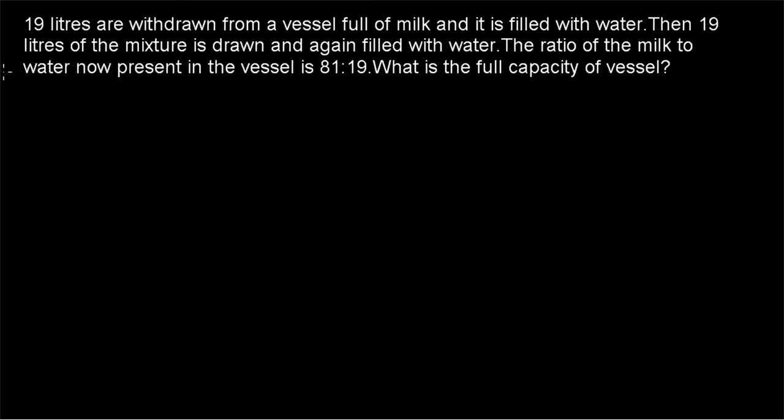Hi friends, welcome to today's class. Today's question is: 90 liters are withdrawn from a vessel full of milk and it is filled with water. Then 90 liters of the mixture is drawn and again filled with water. The ratio of milk to water now present in the vessel is 81 to 19. We have to find the full capacity of the vessel. This is a type of withdrawal question.